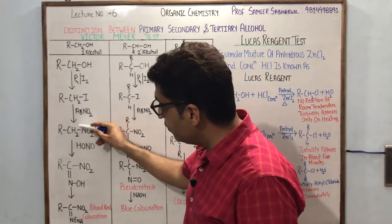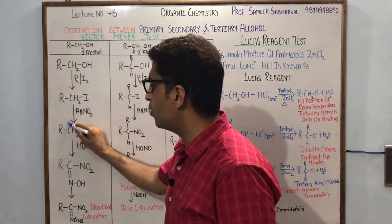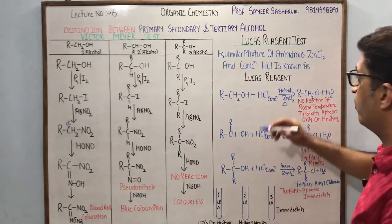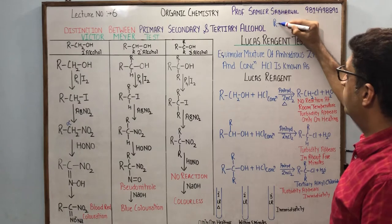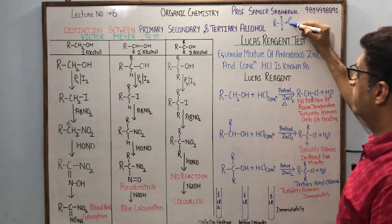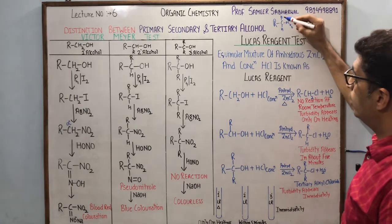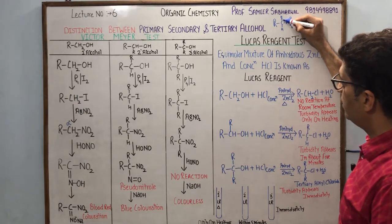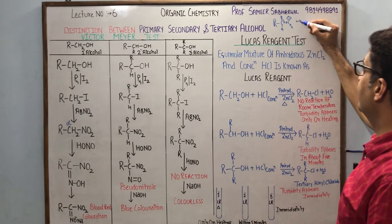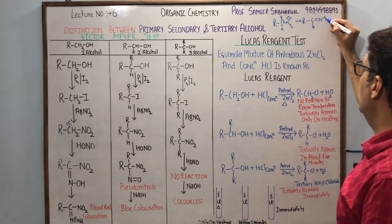Nitroalkanes are very special molecules. The nitro group is an electron-withdrawing group, and due to its withdrawing nature it is easier to remove the hydrogen on the alpha carbon. This is very important chemistry. I have RCH2NO2 — this is a strong withdrawing group. If I shift the sigma bond and pi bond, I get RCH2-O-N=O with a coordinate bond and O negative.